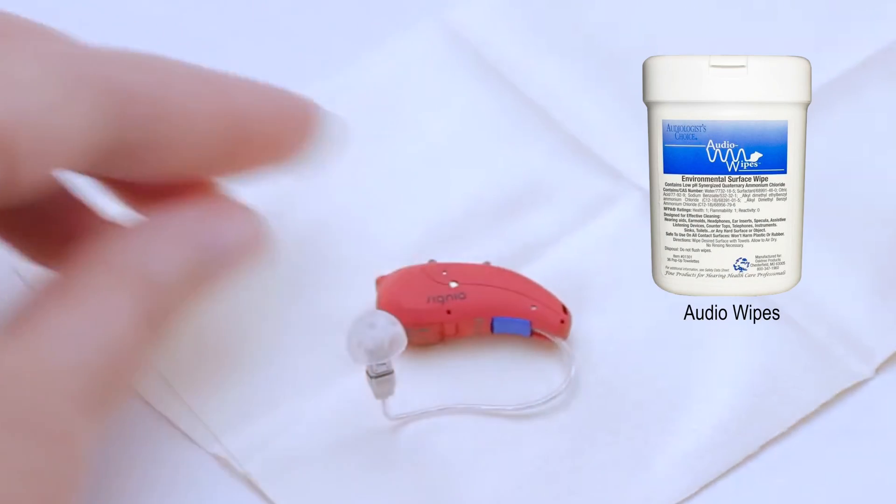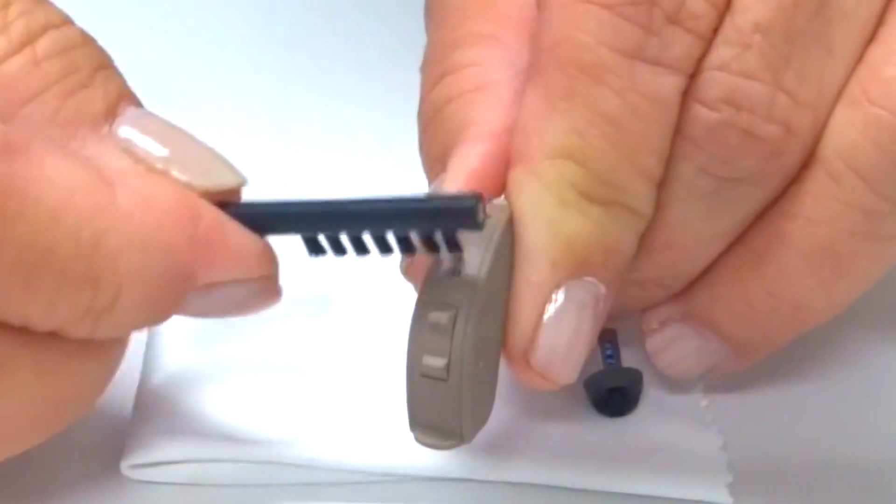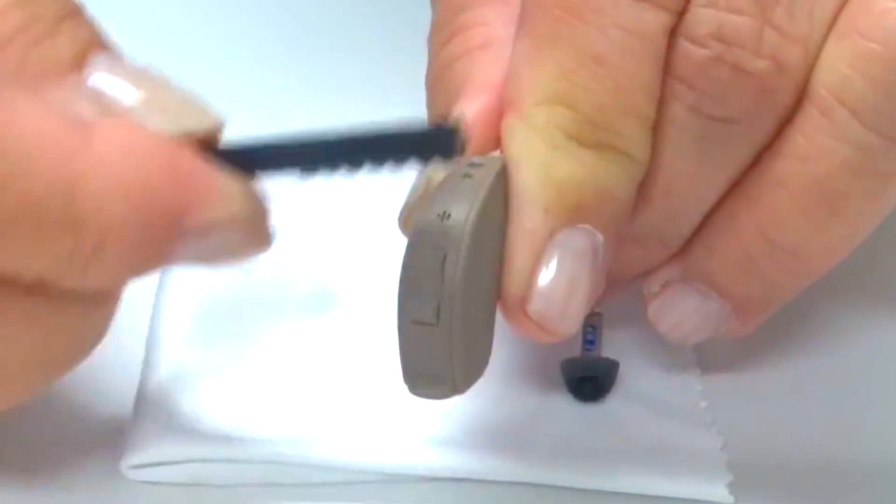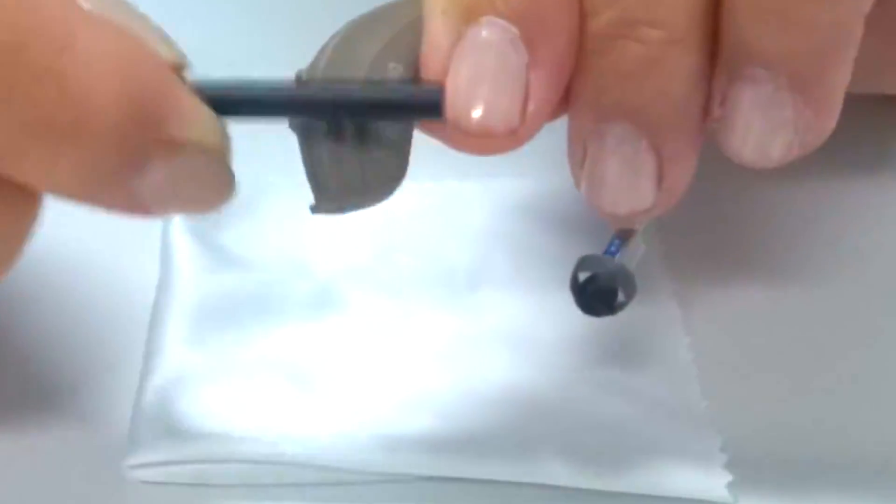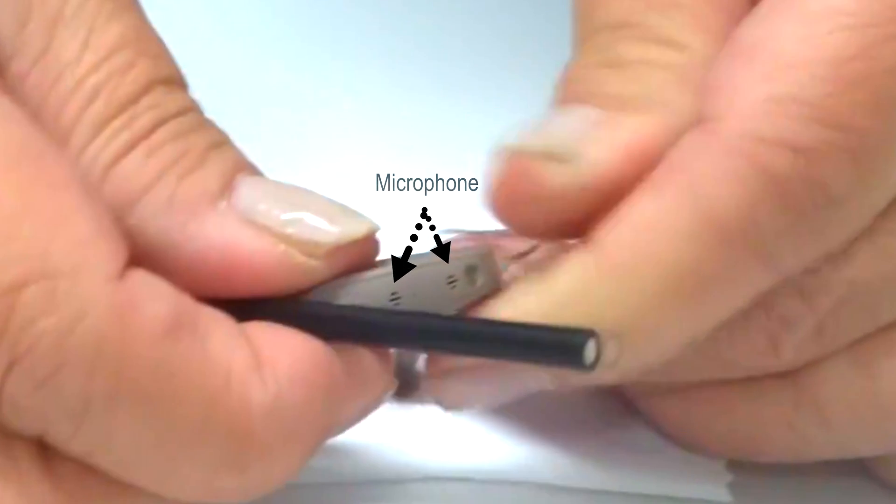If you need something wet, then use audio wipes that are meant for hearing aids. A brush can be used for particularly stubborn areas as demonstrated here. Remove any earwax that may be blocking the microphone openings with the brush as well.